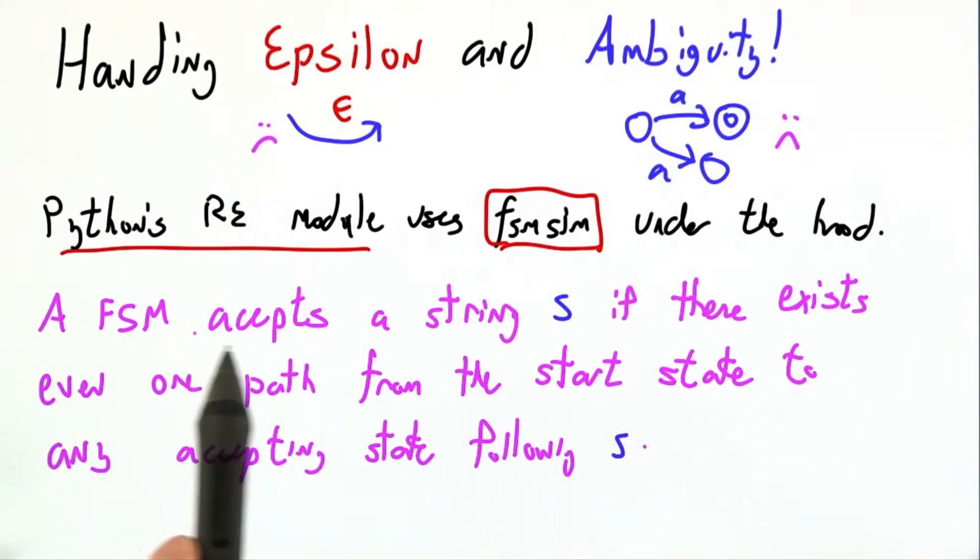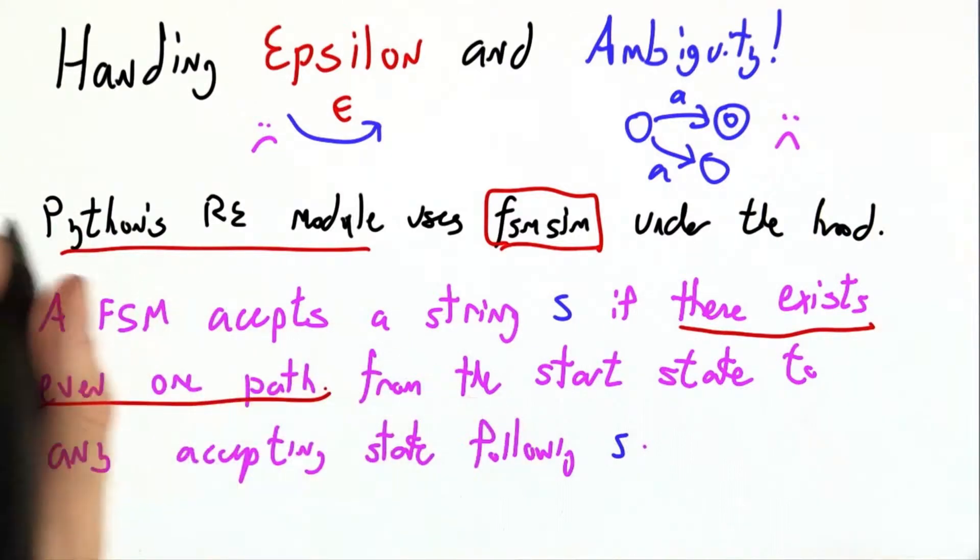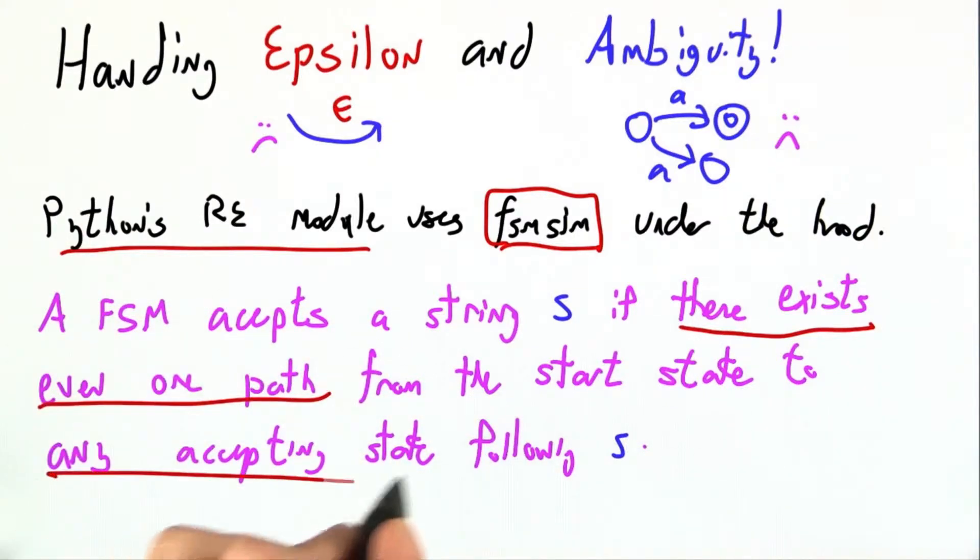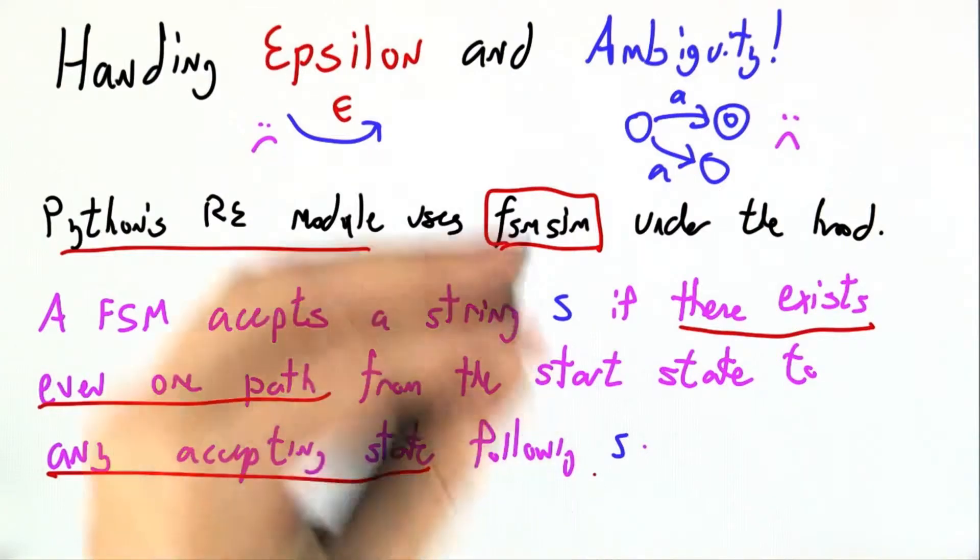We say that a finite state machine accepts a string S if there exists even one path from the start state to any accepting state that follows S.